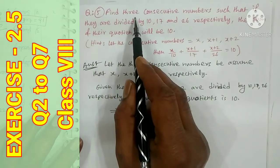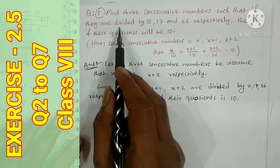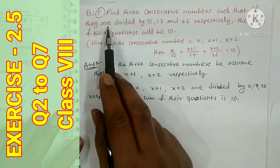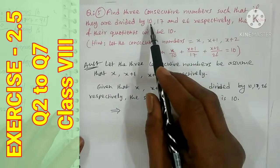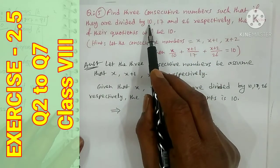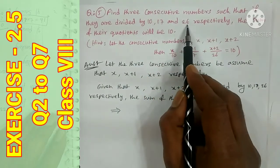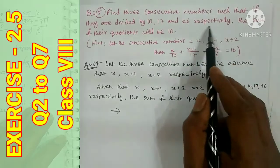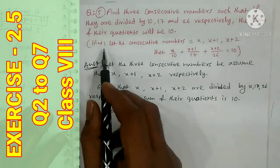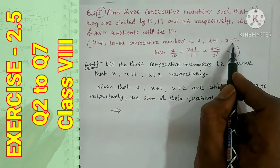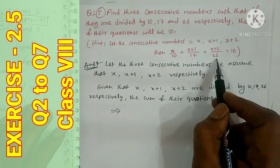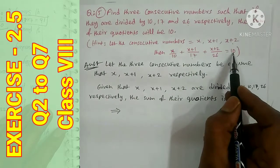Question number 5: Find 3 consecutive numbers such that when they are divided by 10, 17, and 26 respectively, the sum of their quotients is 10. We let the 3 consecutive numbers be x, x plus 1, and x plus 2. The equation is: x/10 plus (x plus 1)/17 plus (x plus 2)/26 = 10.